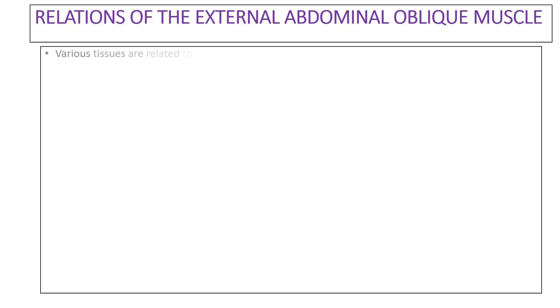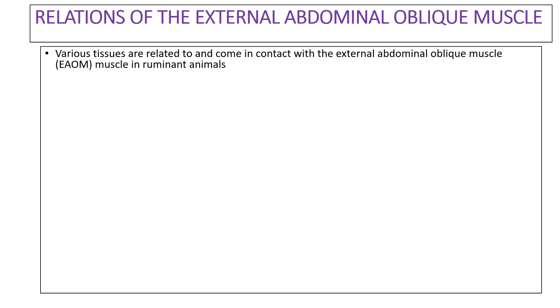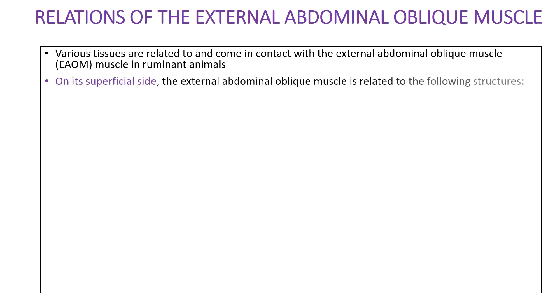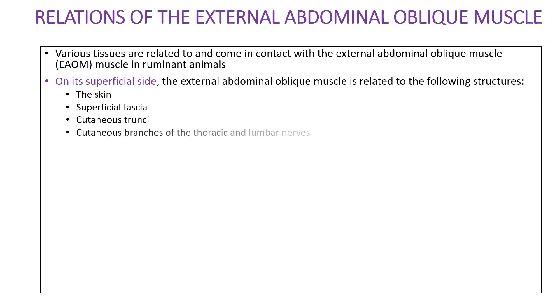To what structures is the external abdominal oblique muscle related? Various tissues are related to and come in contact with the external abdominal oblique muscle in ruminant animals. On its superficial side, the muscle is related to the following structures: the skin on the outside, the superficial fascia, the cutaneous trunci, the cutaneous branches of the thoracic and lumbar nerves, and also the abdominal tunic.